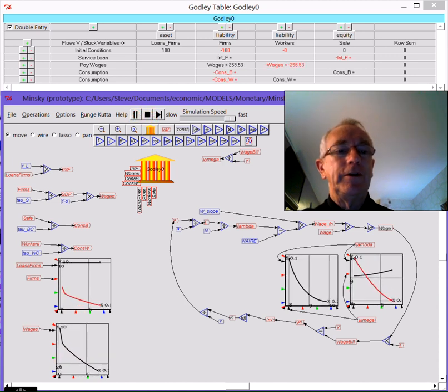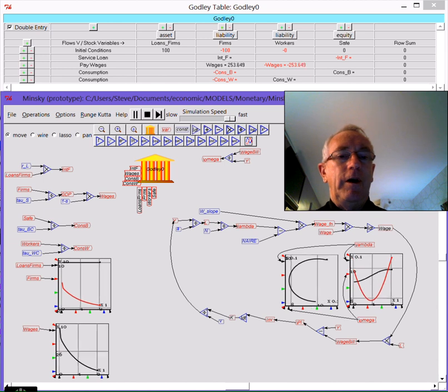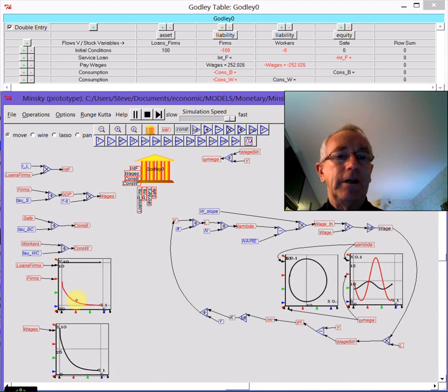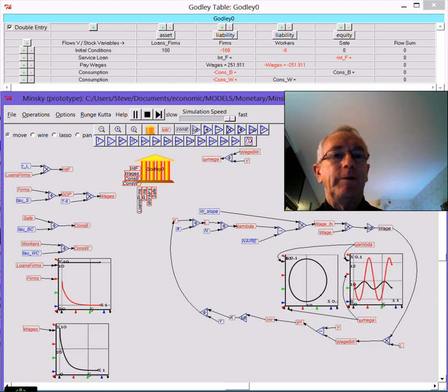So if I stop the model and simulate, I've got two basically separate systems. One with the wage settling down to an equilibrium level here, the amount of money in the deposit account settling down to equilibrium. And over here, I've got cyclical behaviour.